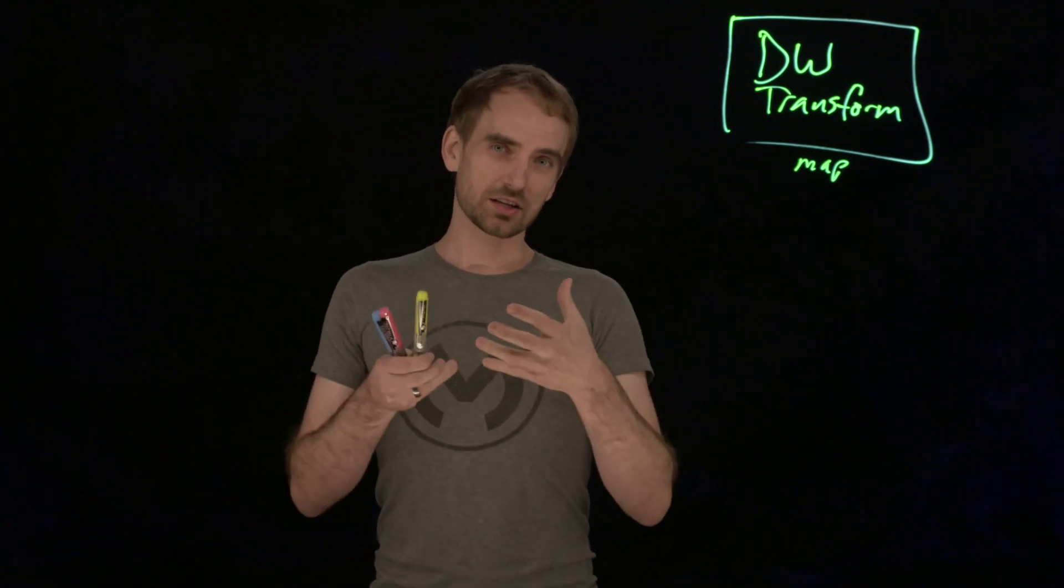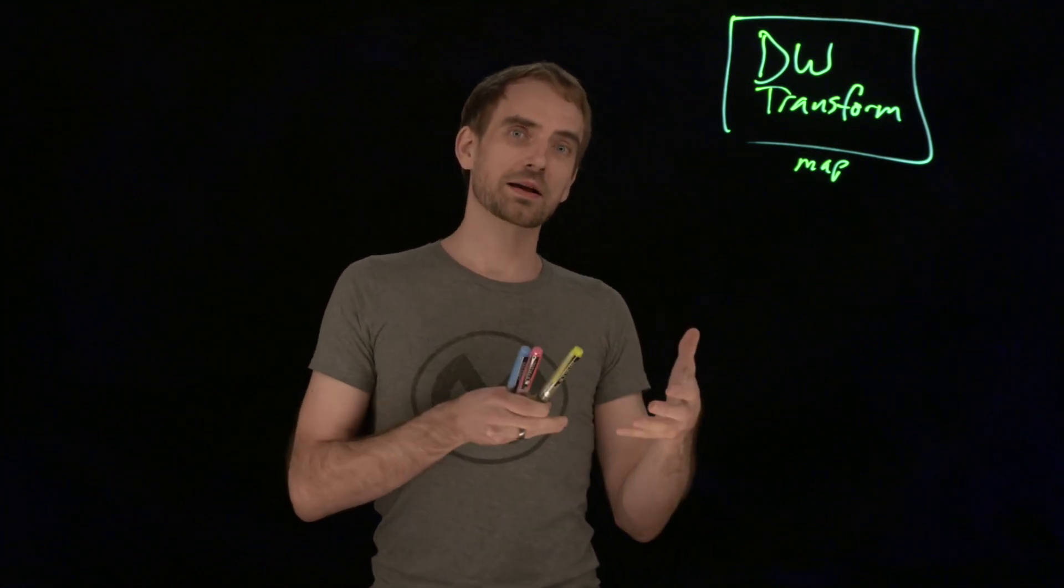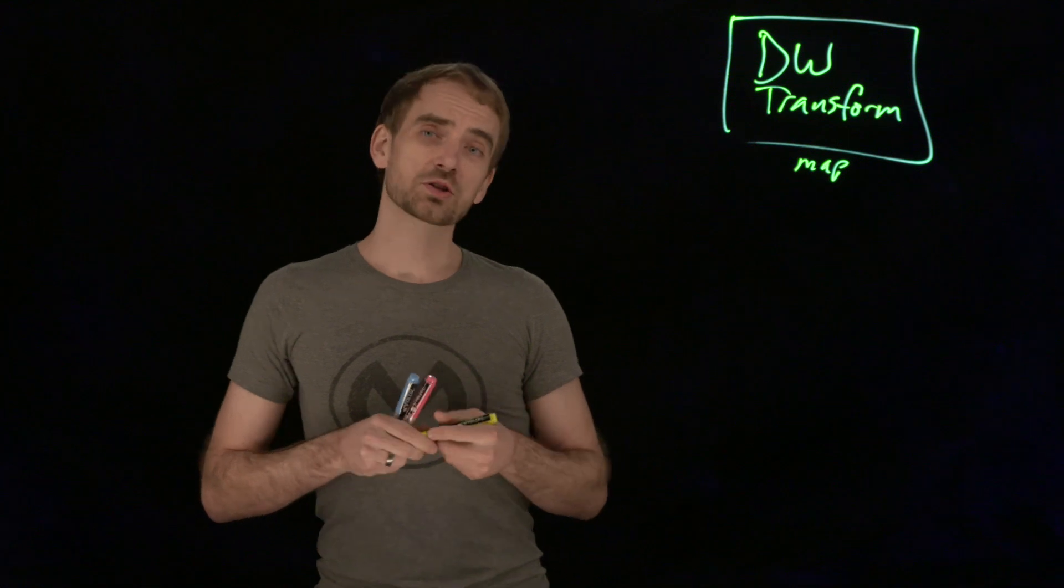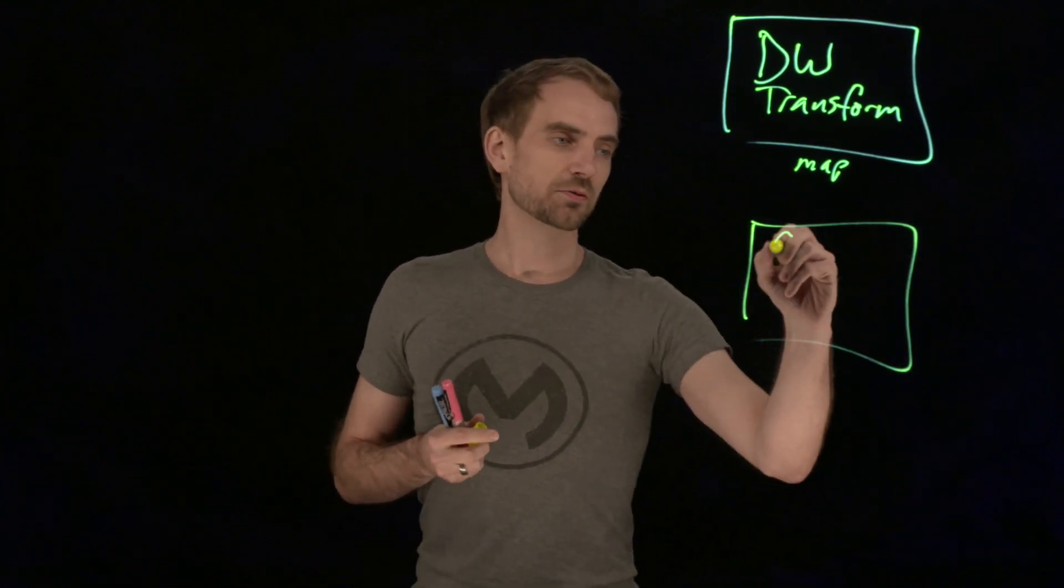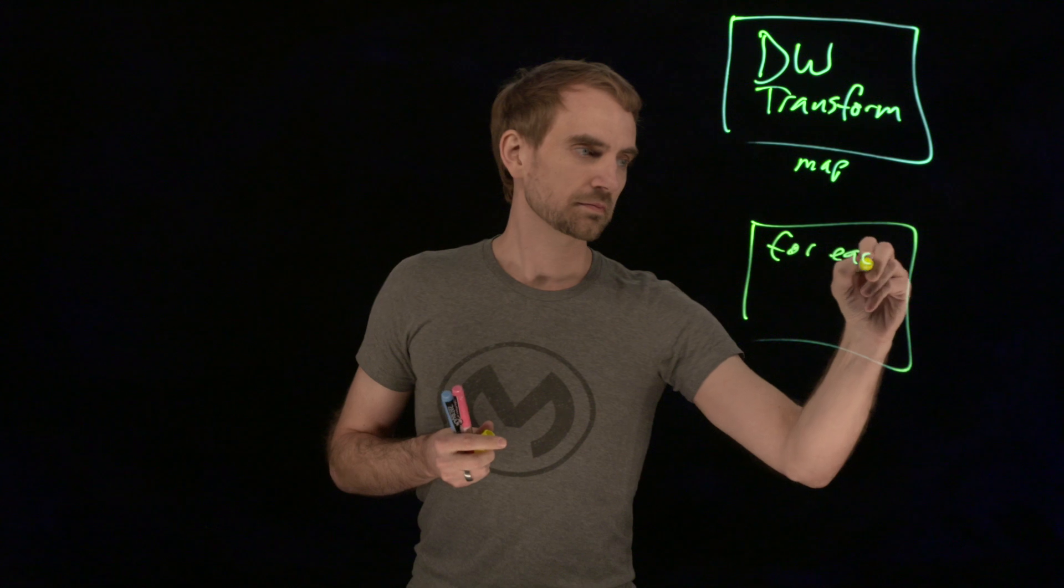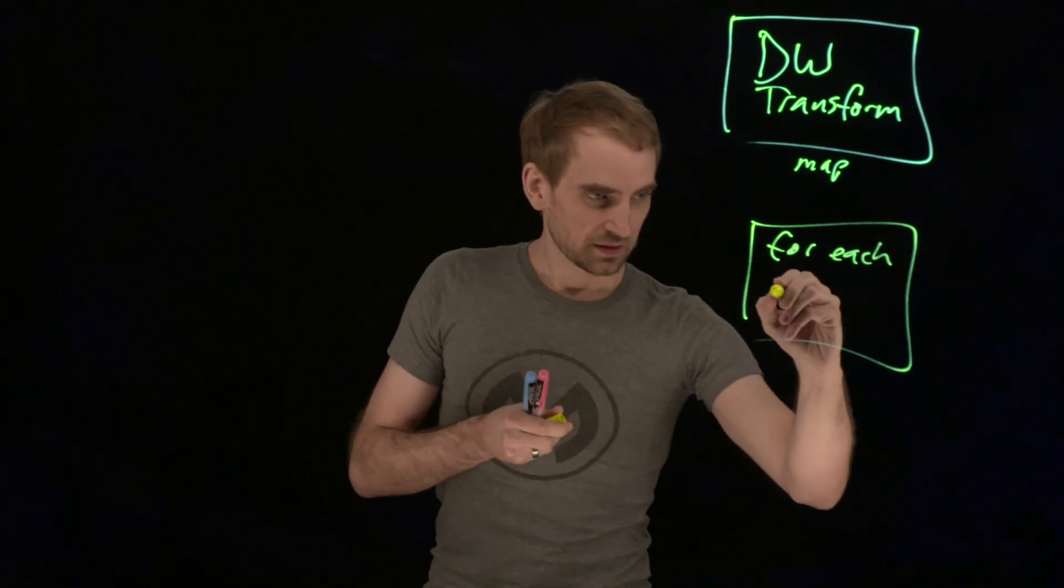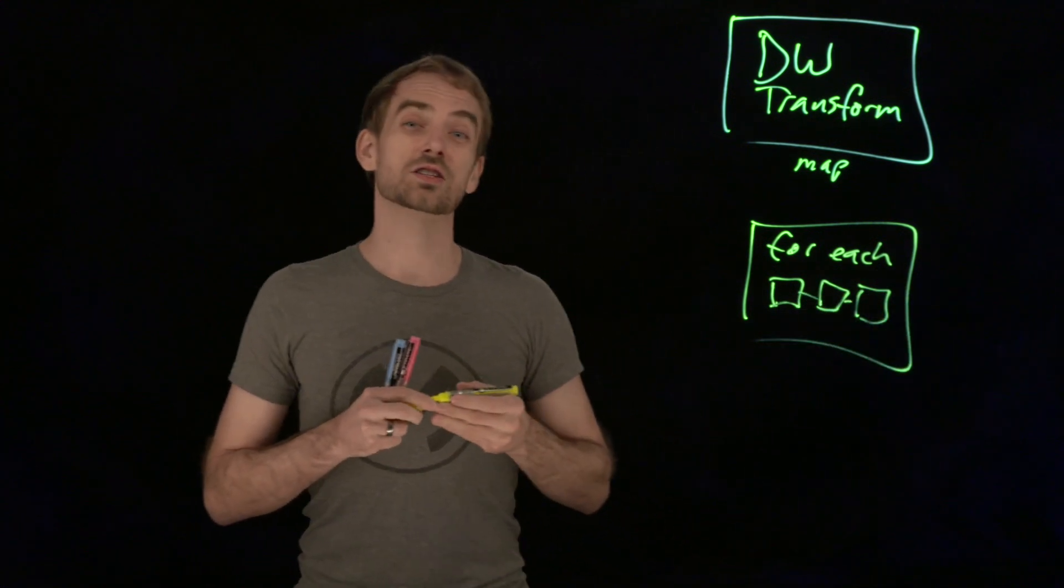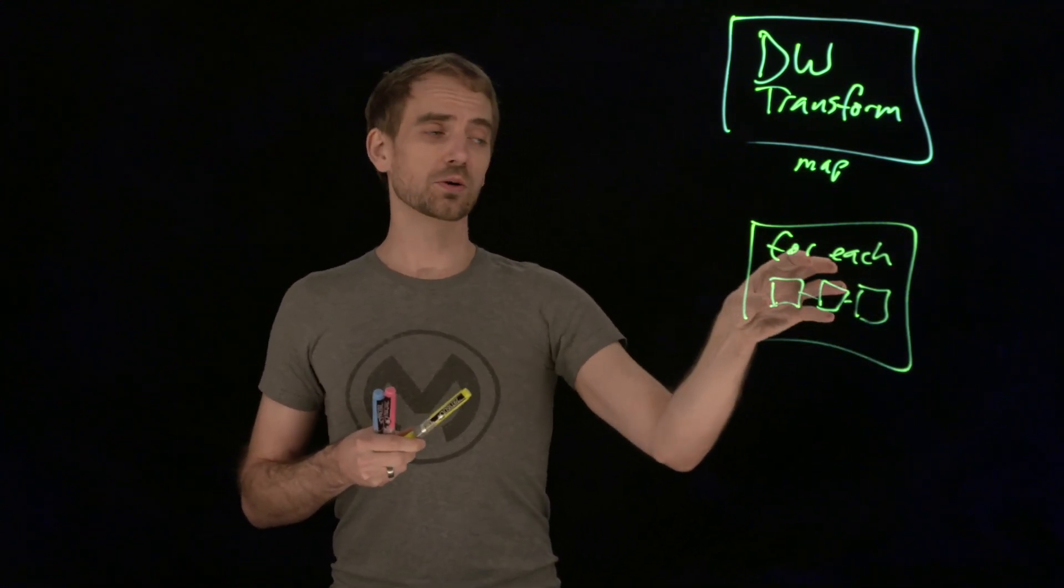When you need to execute lines of code or event processes for each record, that's when you have to start considering using scopes. The simplest one to start with, with your looping needs would be the ForEach scope. ForEach scope has an ability to put bits of flow code, event processes inside the scope, and it will loop over executing that for each record.